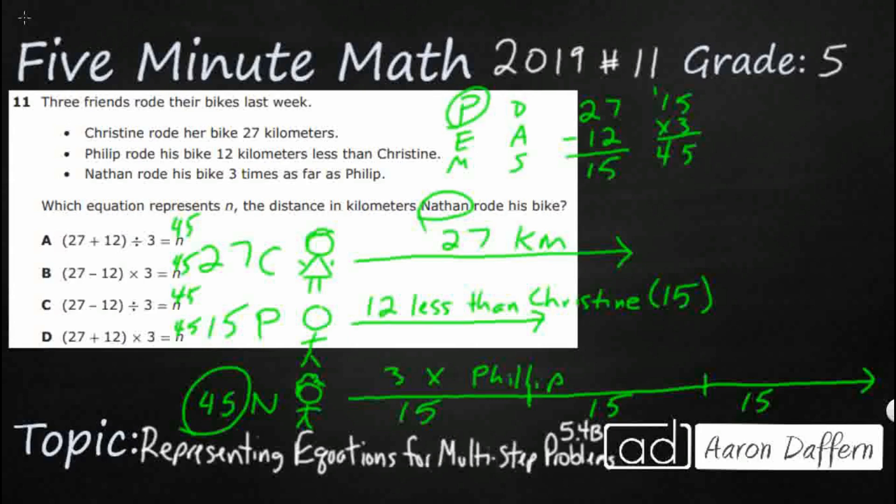So 27 plus 12, that is going to get you 39, and then afterwards we are going to do our division. So 39 divided by 3, no, it does not equal 45, that equals 13, so it is not going to be A.